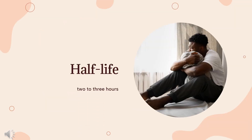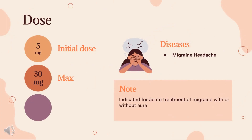Half-life: The plasma half-life of rizatriptan in males and females ranges from 2 to 3 hours. Dose — Migraine headache: Rizatriptan is indicated for acute treatment of migraine with or without aura. Maxalt or Maxalt MLT: 5–10 mg orally at onset of symptoms; may repeat dose after 2 hours if necessary, not to exceed 30 mg per 24 hours.